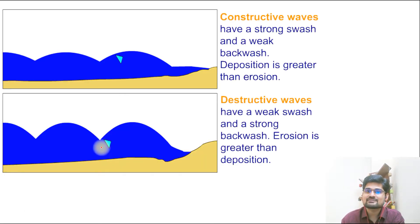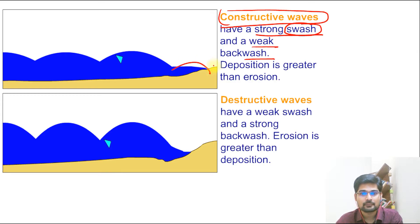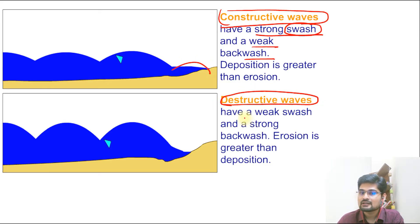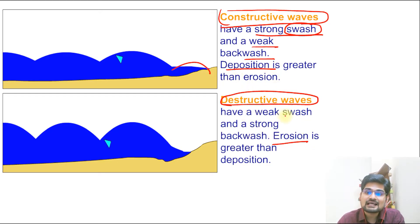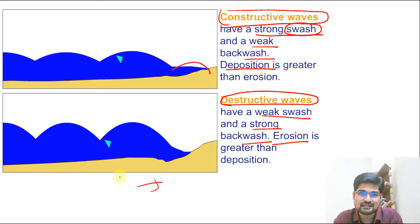This is why waves are classified as constructive or destructive. Constructive waves have a strong swash and weak backwash, meaning more deposition is occurring. Destructive waves have weak swash but strong backwash, meaning erosion is greater. So the nature of sea waves — swash, backwash, constructive, destructive — is fundamental to understanding coastal processes.